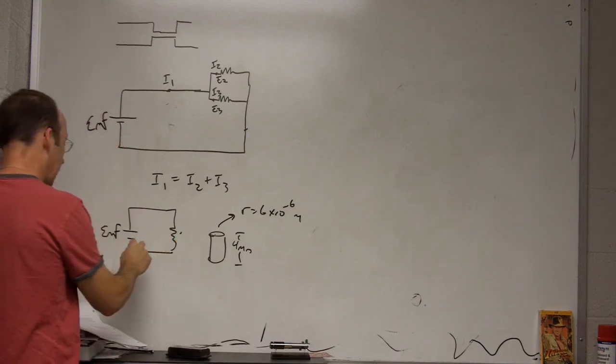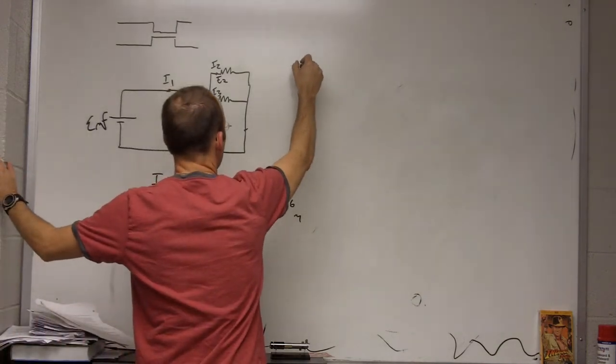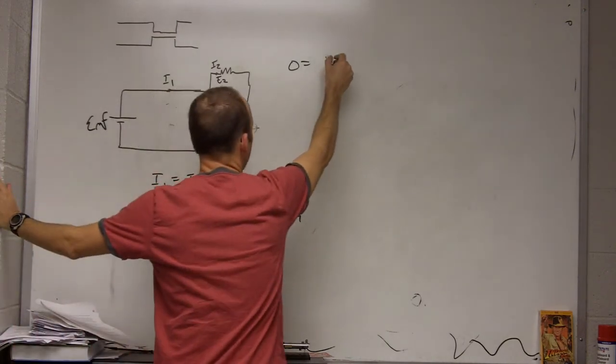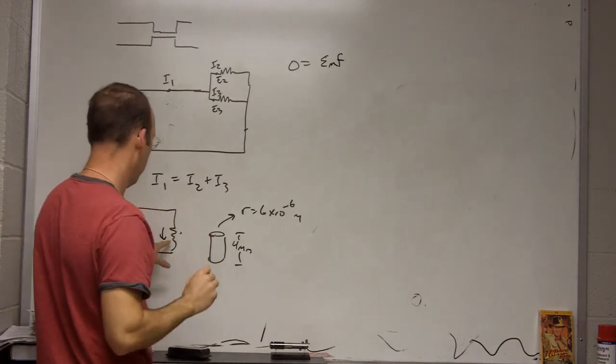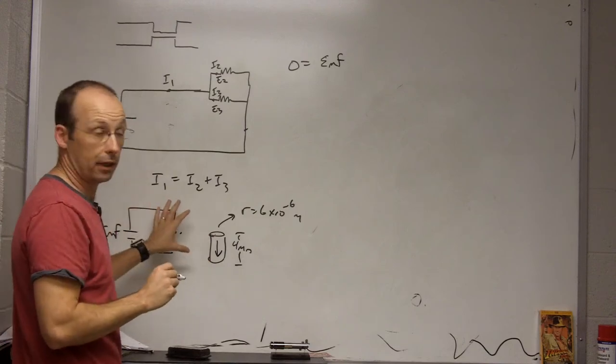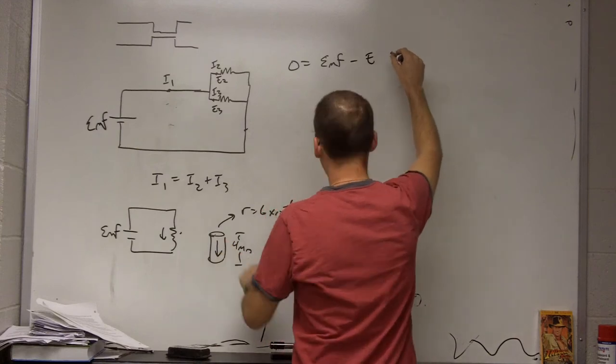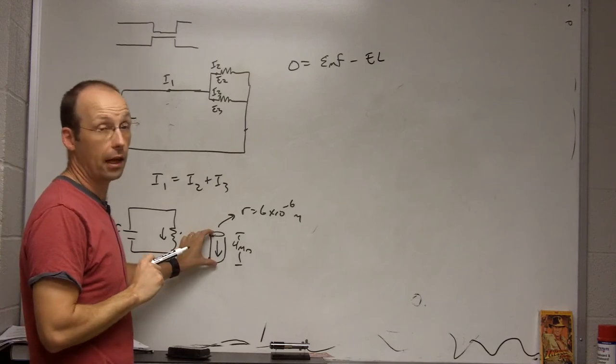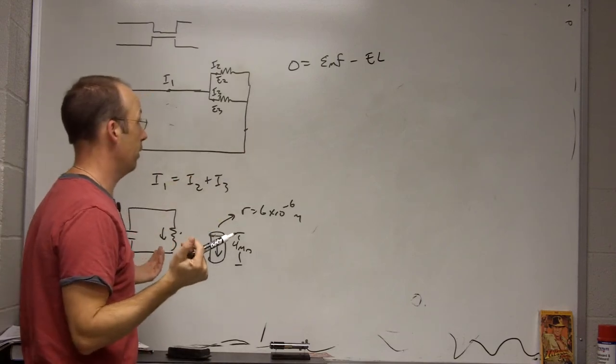So the loop rule says that as I add up the change of the potential around this whole thing, it has to come up to zero. So I get zero equals, if I go across there, I'm going to get a plus EMF. And then I'm going to have, the electric field is going to be going down that way, so in here I have an electric field. And the rest I'm going to assume is negligible. So here I'm going to get minus E times the length. Because that's a constant electric field over the length of that filament, that's what I get.